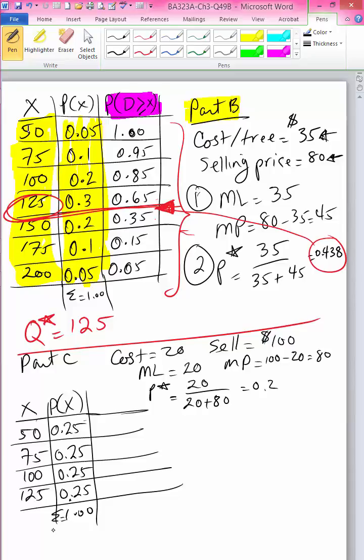So we've done step 1, which is to identify marginal loss and marginal profit. We've done step 2, which is to compute our critical probability. Step 3 is to find probability that demand will be greater than or equal to x.